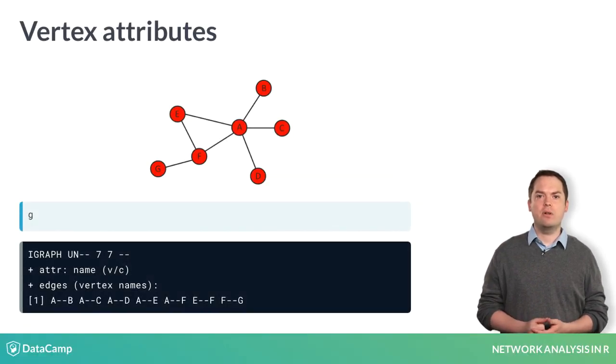In the example network from the previous video, we already have one vertex attribute. Each vertex has a label or a name. We can see this in the iGraph object where it says ATTR name.